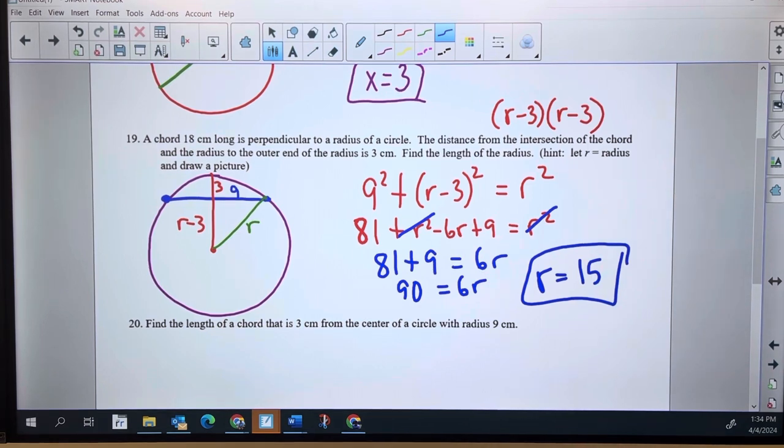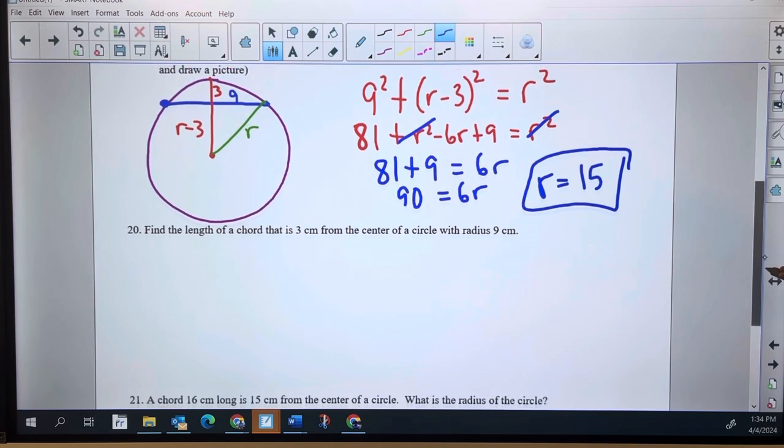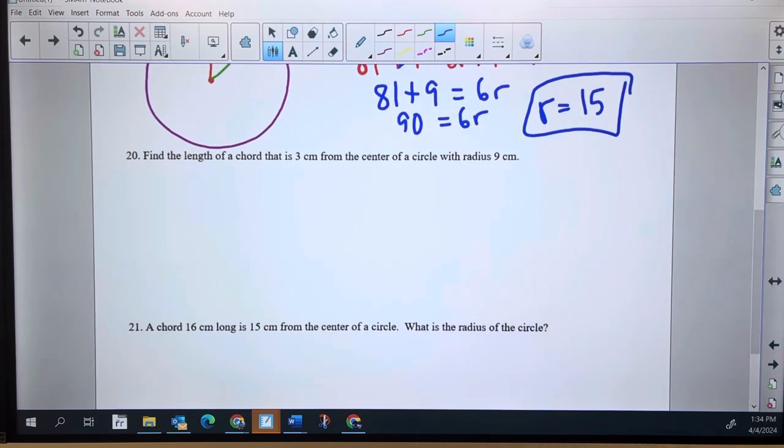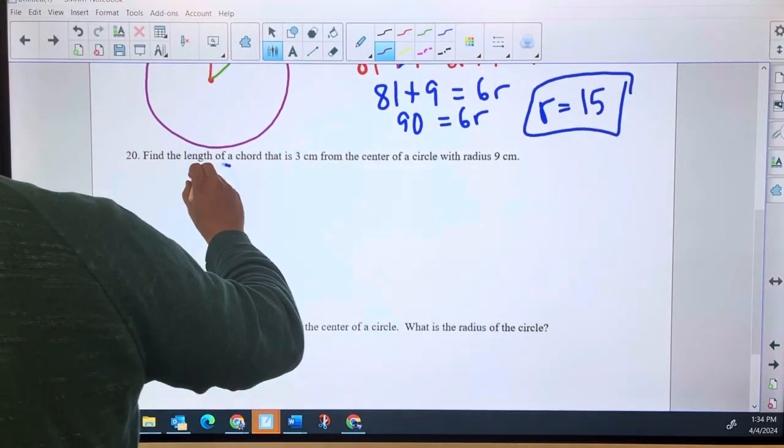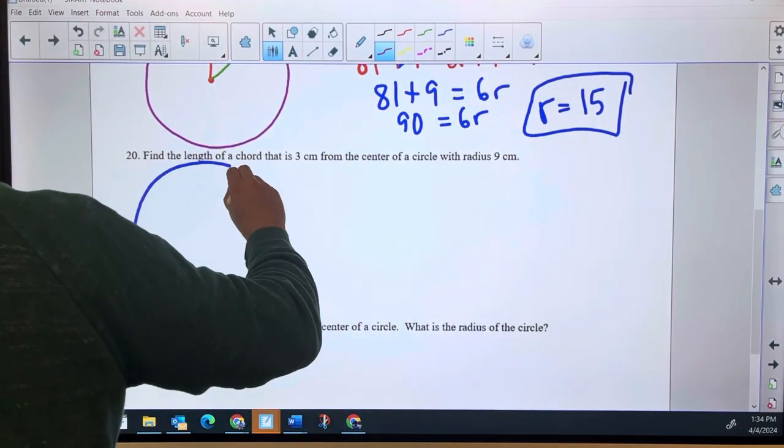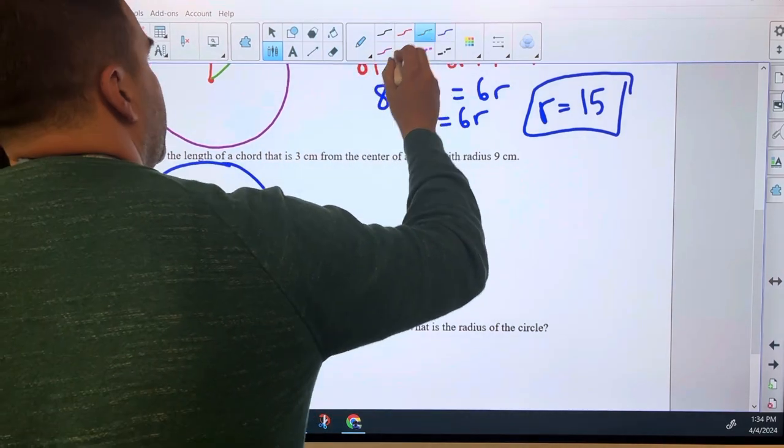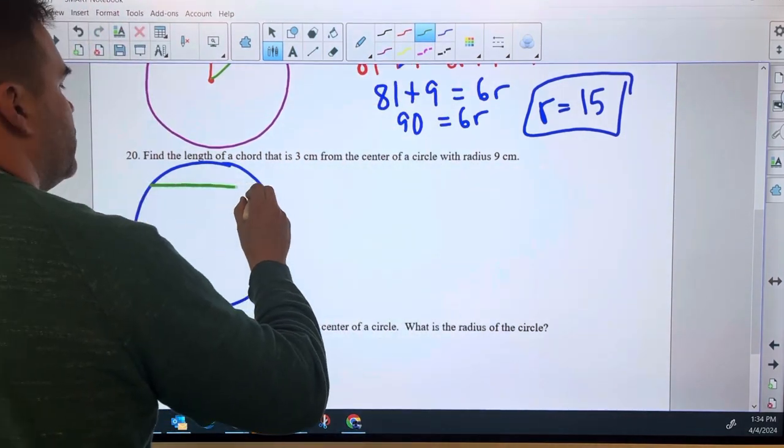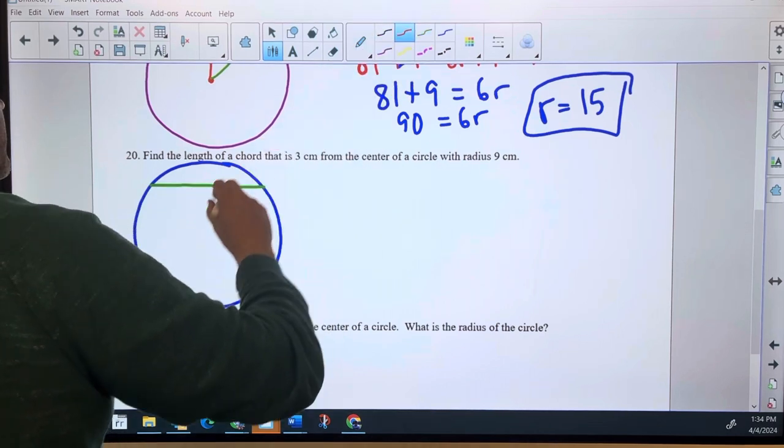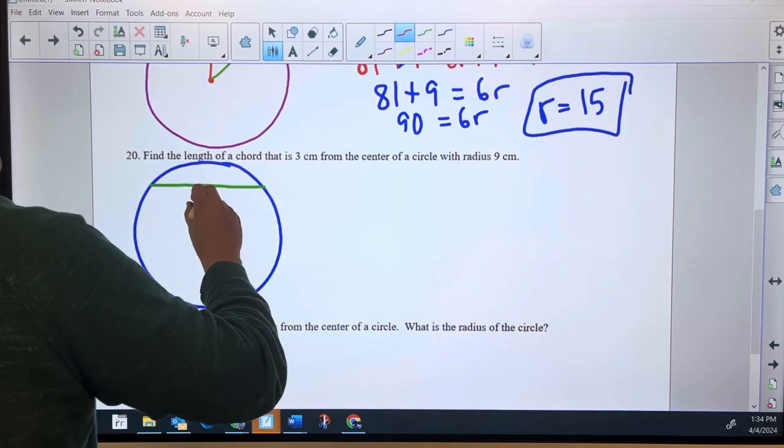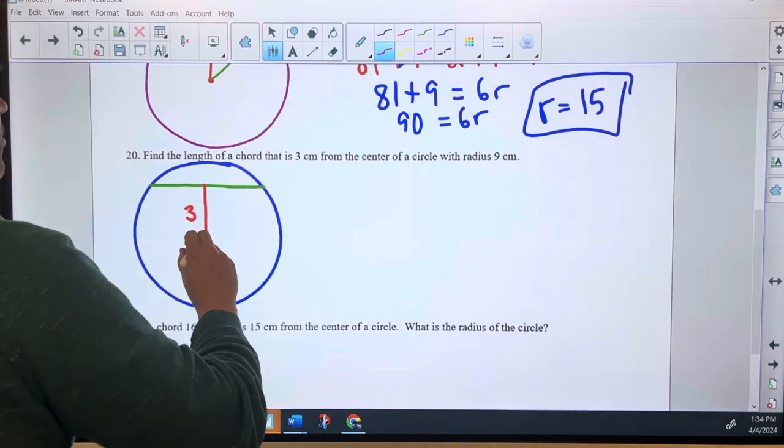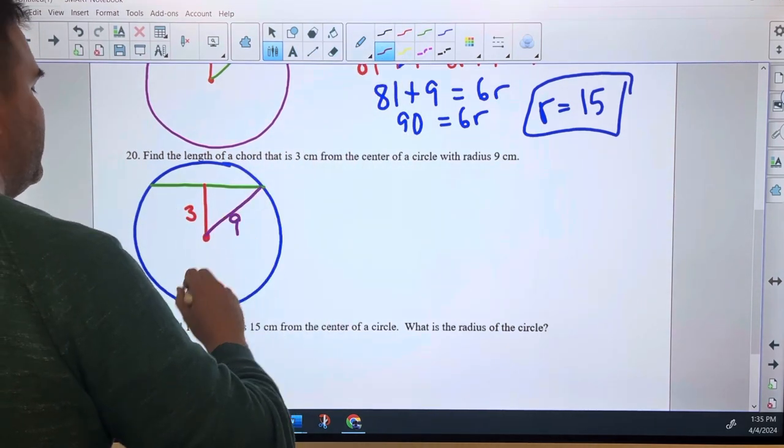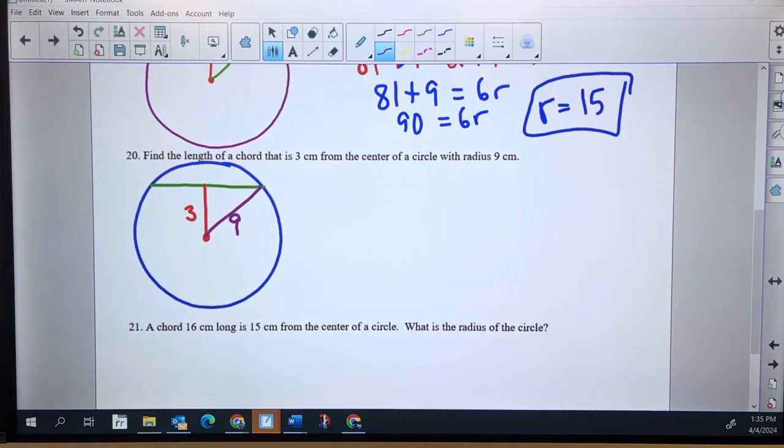Number 20. Find the length of a chord that is three. Same picture, right? So we're really getting used to this picture. Here's the circle. Here's the chord. The chord is three centimeters away. And the radius of the circle is nine. Classic picture, right?